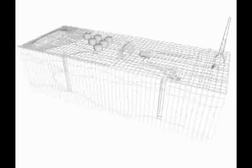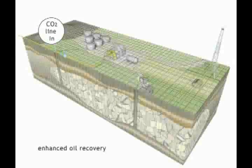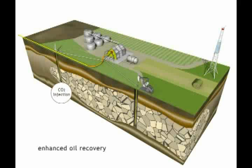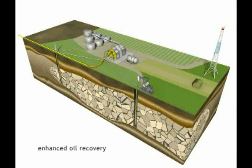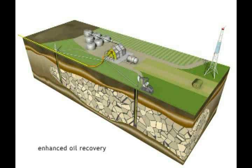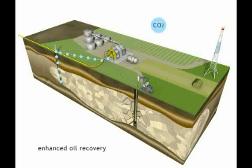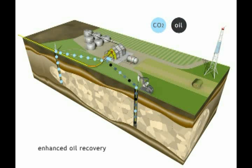One near-term opportunity for geologic sequestration is the use of carbon dioxide in enhanced oil recovery. Steam in combination with carbon dioxide is routinely injected into depleted oil fields to help recover additional petroleum. This process can be modified to allow for the permanent storage of carbon dioxide in empty geologic formations that previously held oil. Carbon dioxide captured from fossil power plants is injected into an oil field to extract the remaining oil trapped in the rock pores and crevices of the reservoir. Once the remaining oil is displaced and the oil field is exhausted, the well holes are sealed and the carbon dioxide is permanently stored.